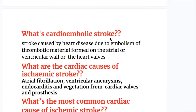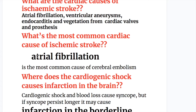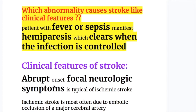What is cardioembolic stroke? Stroke caused by heart disease due to embolism of thrombotic material formed on the atrial or ventricular wall or the heart valves. Cardiac causes include atrial fibrillation, ventricular aneurysms, endocarditis, and vegetation from cardiac valves and prosthesis. Atrial fibrillation is the most common cause of cerebral embolism. Patients with fever or sepsis may manifest hemiparesis, which clears when the infection is controlled.